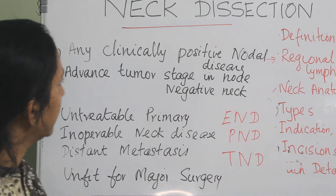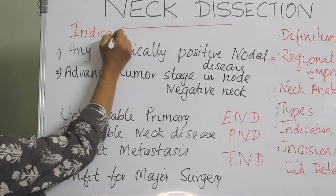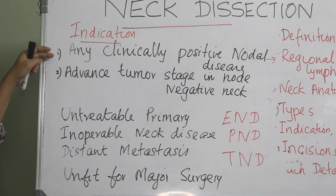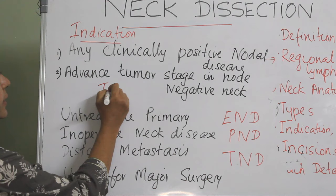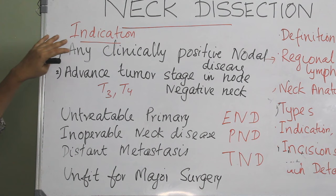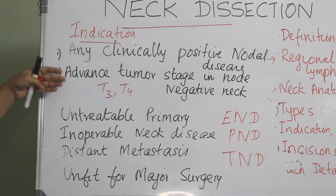Coming to the indications: in general, the indications for neck dissection are any clinically positive nodal disease in the neck, and advanced tumor stage in the node-negative neck, that is T3 and T4. So clinically positive nodes in the neck, and advanced stages with an N0 neck, are the general indications for neck dissection.